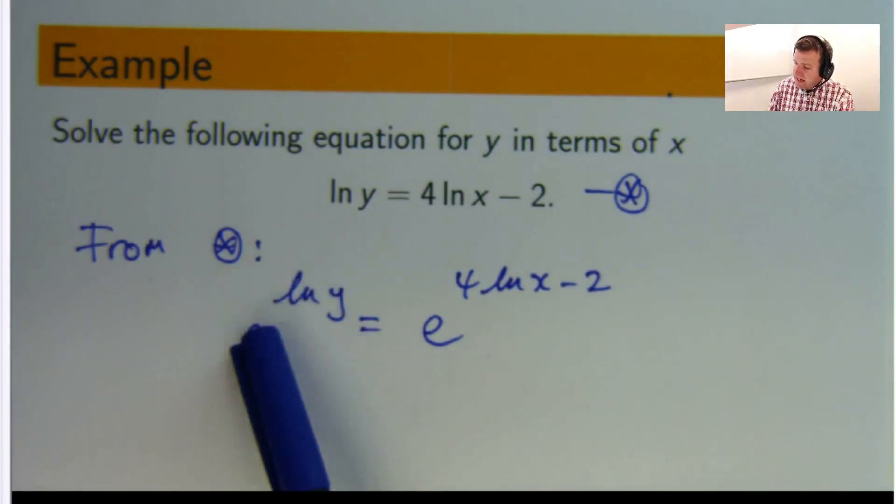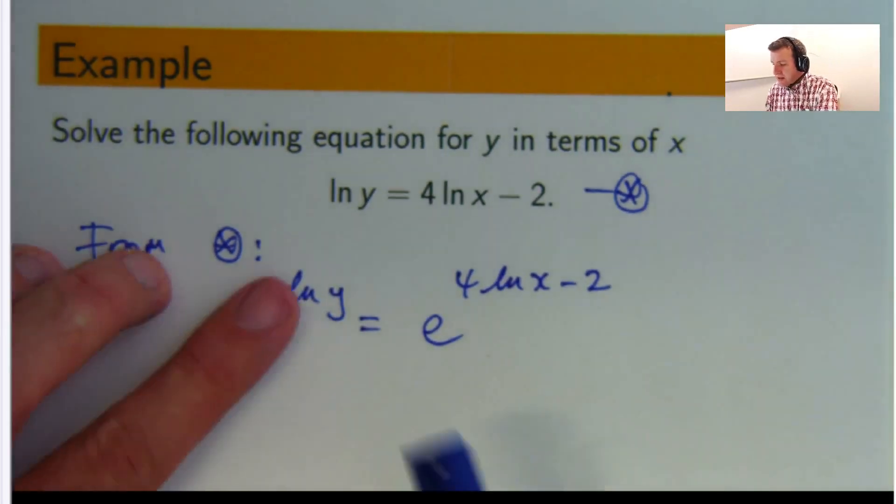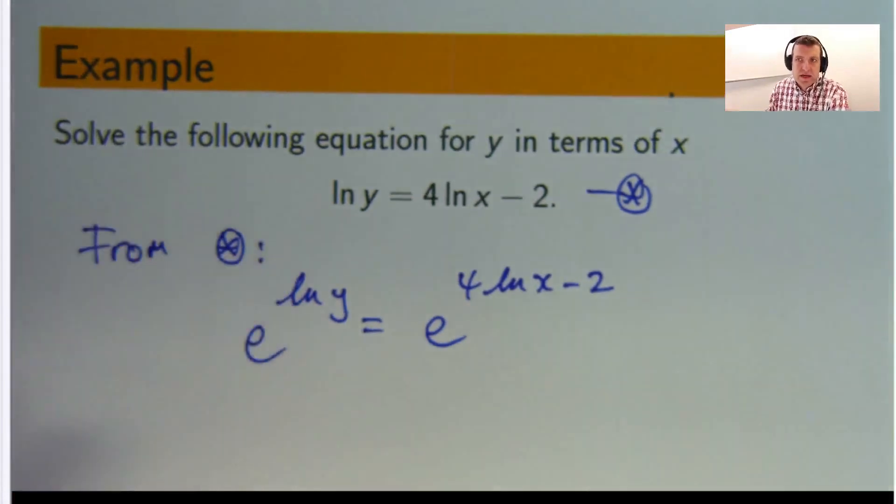Now over here the e and the log cancel each other out, and the y just comes down. That's what we mean when we talk about inverse processes or opposites.